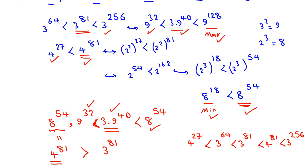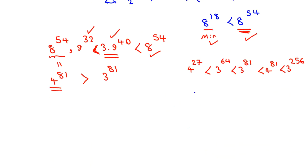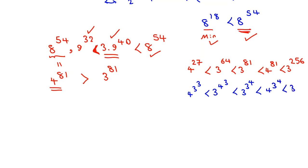So, writing the final solution in increasing order: 4 to the 3 to the 3, then 3 to the 4 to the 3, then 3 to the 3 to the 4, then 4 to the 3 to the 4, and finally 3 to the 4 to the 4. That is the complete ordering.